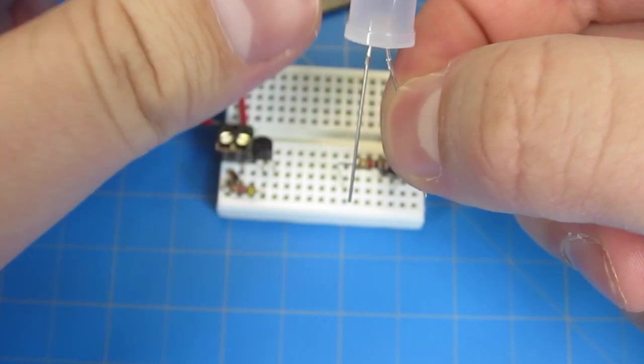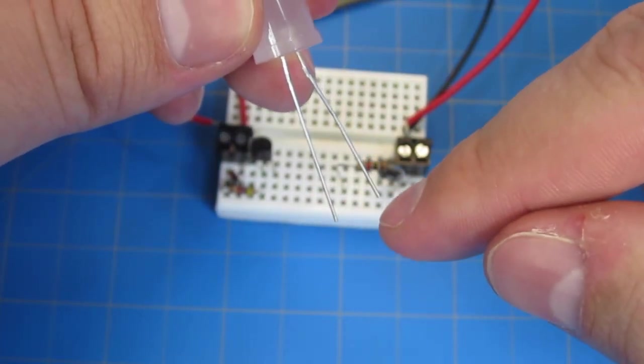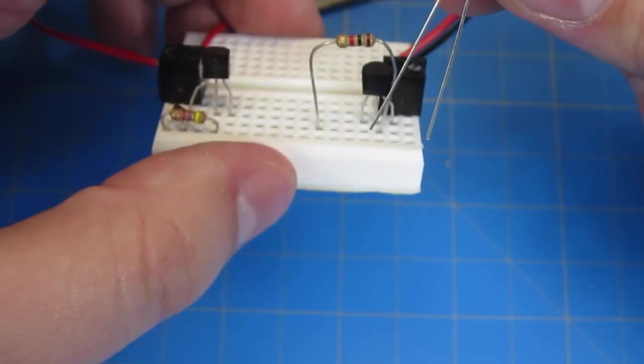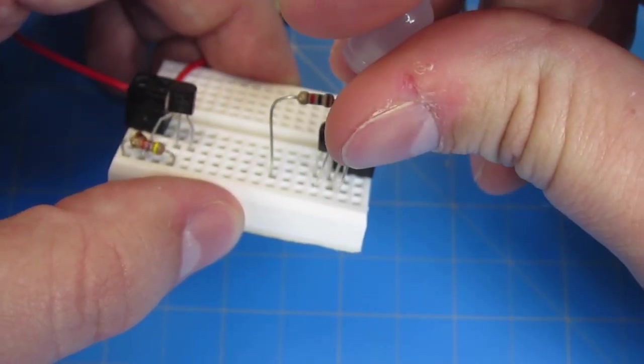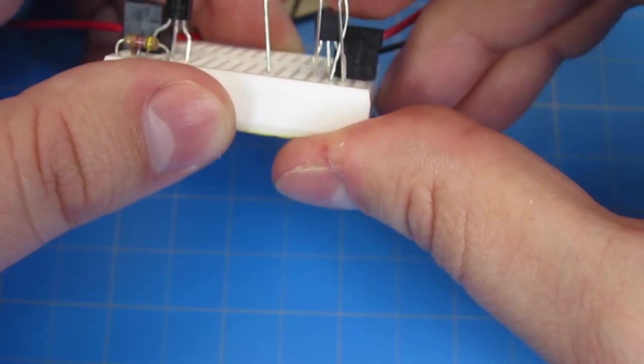Our LED has two legs. The long leg is the positive leg, and the negative leg is the short leg. Spread them apart a bit. Our long positive leg is going into the same row as the left leg of our transistor. Our short negative leg of our LED is going into the same row as our right leg of our transistor.